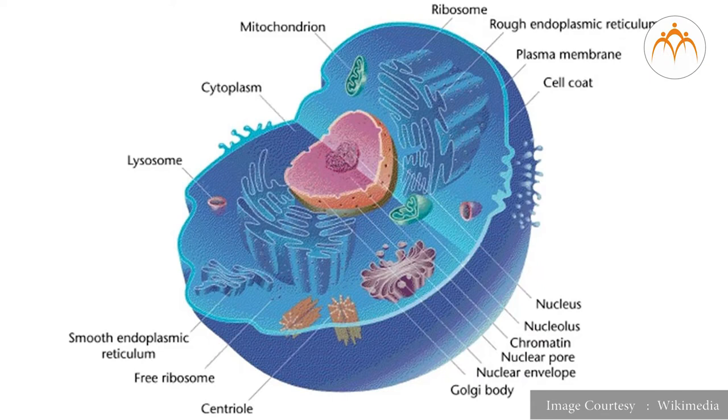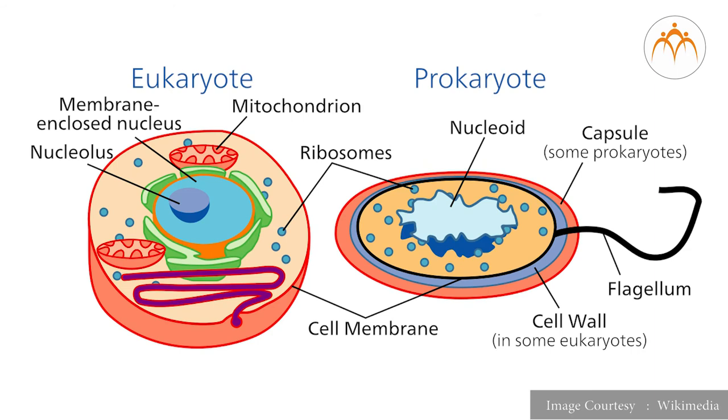Now we will discuss about eukaryotic cells. In eukaryotic cells, genetic material is packed inside the nucleus and organelles are membrane bound. Eukaryotic cells are larger and more complex than prokaryotic cells. Because a eukaryotic cell's nucleus is surrounded by a membrane, it is often said to have a true nucleus.